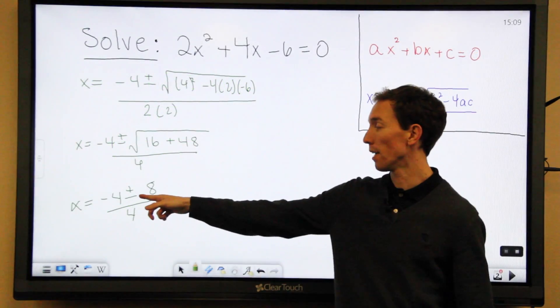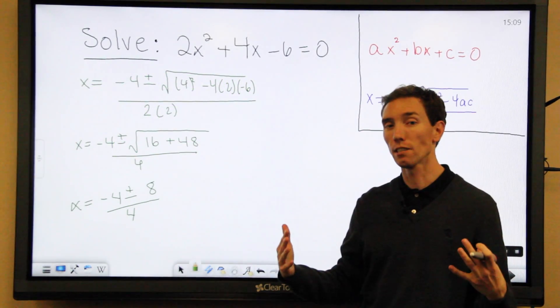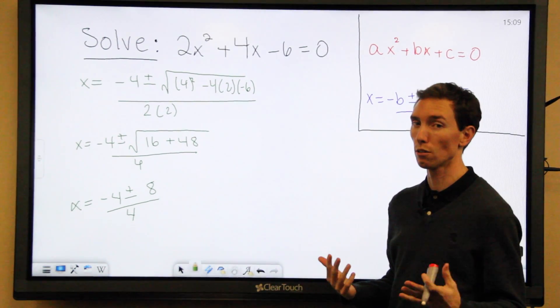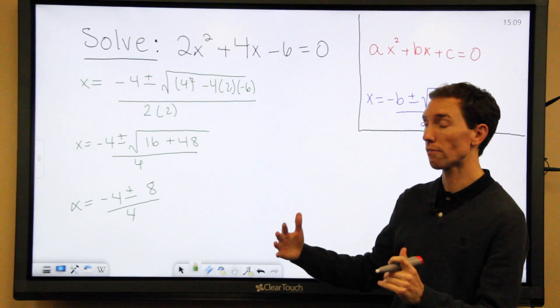So what you have now is the plus or minus sign means you have two separate fractions. One of them is plus, one of them is minus. Because in quadratic equations, you're going to get two solutions. So let's split those up to find our two solutions.